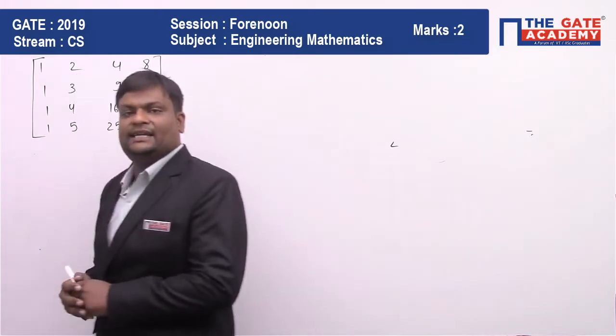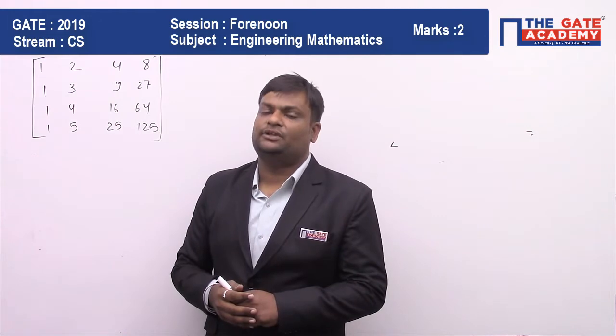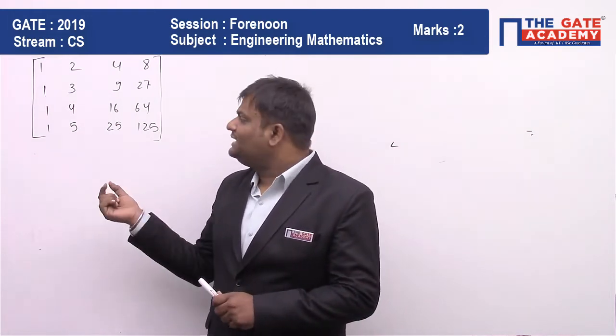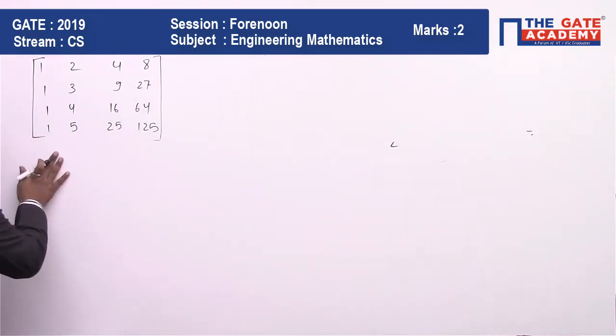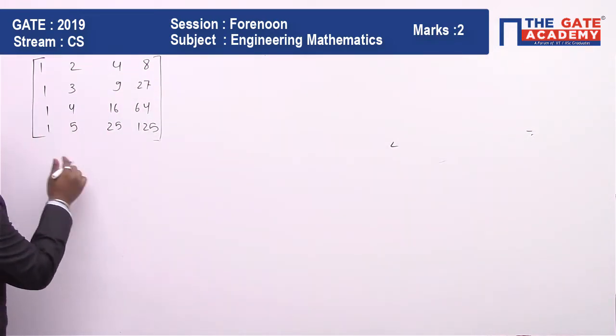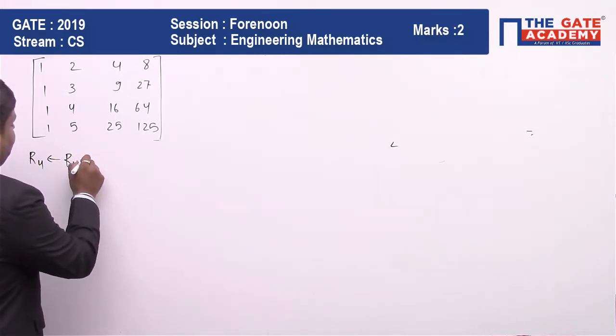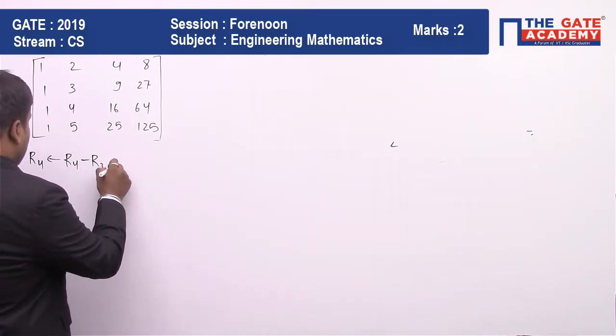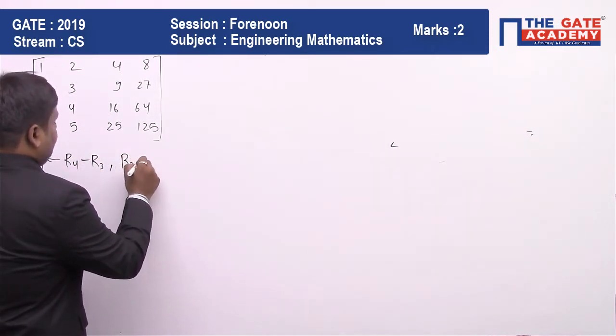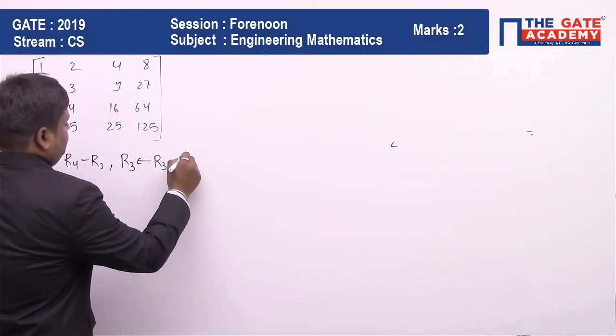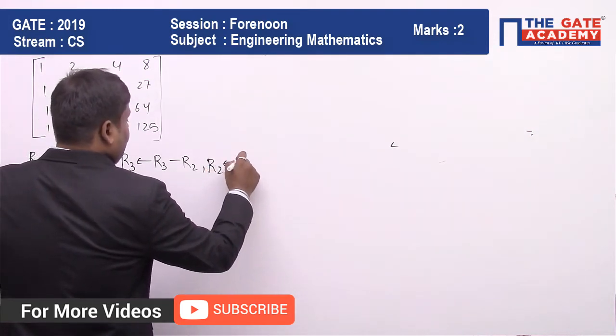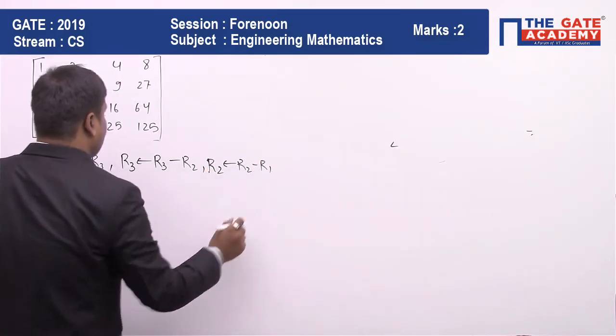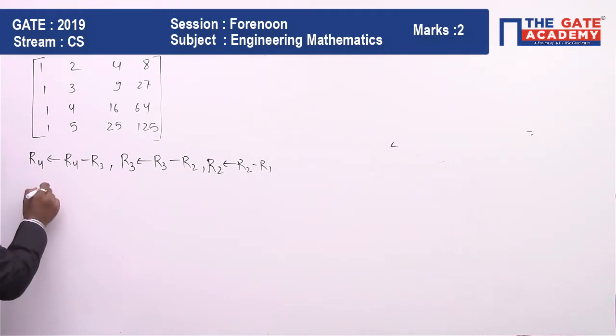To calculate the product of eigenvalues, we have to calculate the determinant of the matrix. To calculate the determinant, we first convert it into echelon form. R4 will be R4 minus R3, R3 minus R2, and R2 minus R1. We have to calculate these values and derive our new matrix.